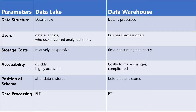Here are some key differences. In a data lake, data is raw and can be any type — structured, semi-structured, or unstructured — and it's stored in its original form. In a data warehouse, data is processed and only structured information is captured and organized in schemas. In a data lake, ideal users are data scientists who use advanced analytical tools, while a data warehouse is ideal for operational users such as business professionals who use analytics after the data is processed.